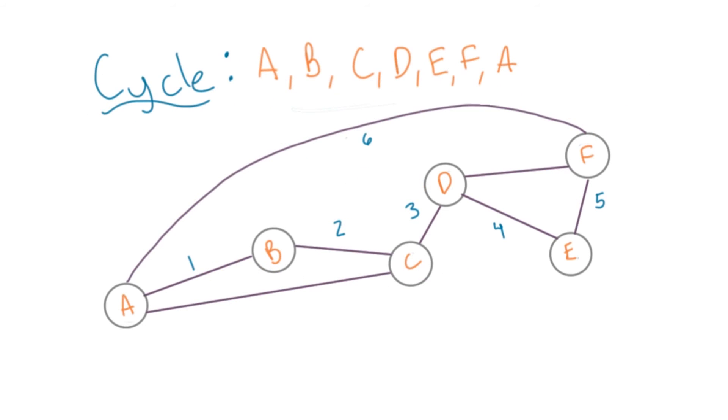I previously mentioned that graphs can have cycles, but trees can't. A cycle happens in a graph when you can start at one node and follow edges all the way back to that node.